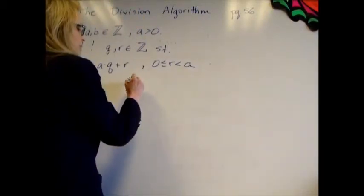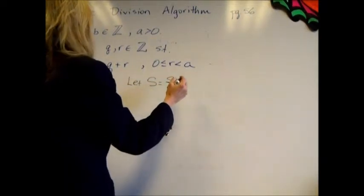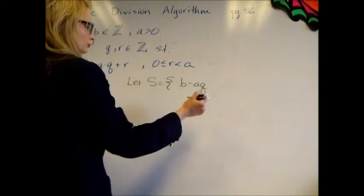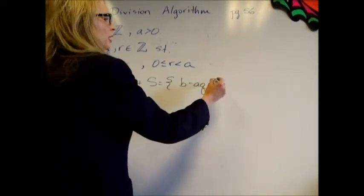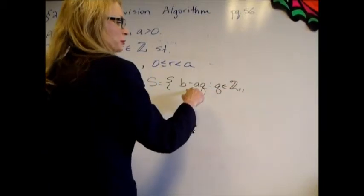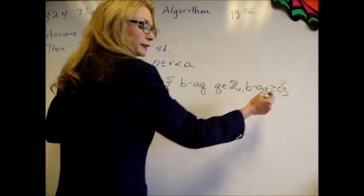So let's let the set S be equal to the set of all B minus AQ where Q is an integer and B minus AQ is non-negative.